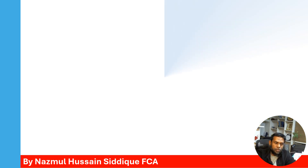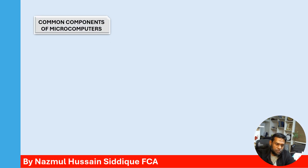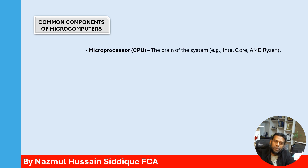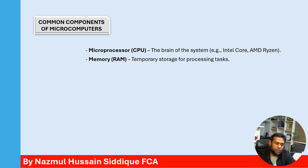The common components used in microcomputers: The microprocessor (CPU) is the brain of the system — examples include Intel Core and AMD Ryzen. Memory, or Random Access Memory (RAM), serves as temporary storage for processing tasks.